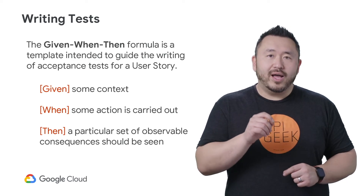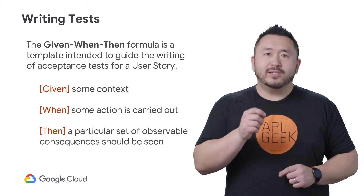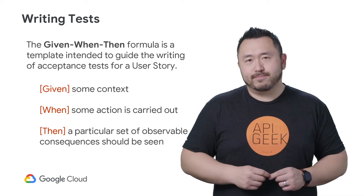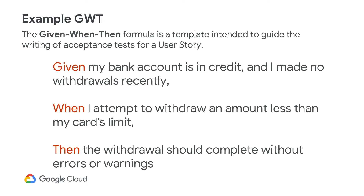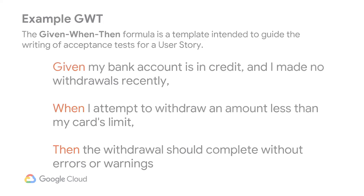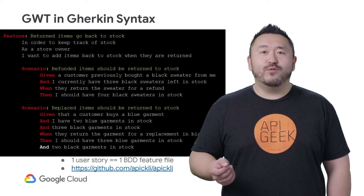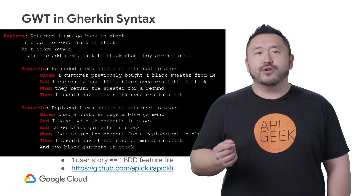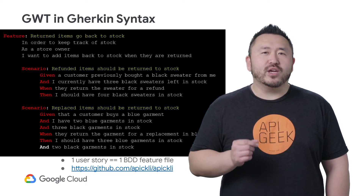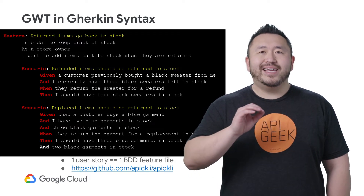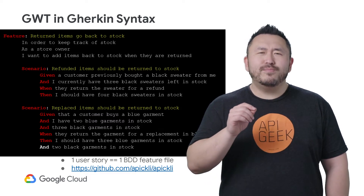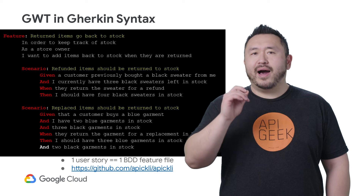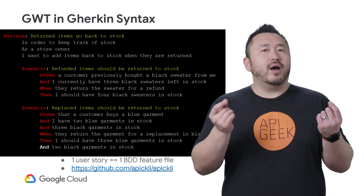One caution: for non-technical product owners, this might be complex for advanced use cases. Here's an example that can be written in the given-when-then format. Notice that it can be written without any technical knowledge. The other great benefit of the given-when-then format is that it can be turned into code. This syntax can be turned into a Gherkin BDD feature file, and test engineers can write test scripts that can be automated. This then perfectly streamlines the process from the high-level user story objective into a testable and automatable script.